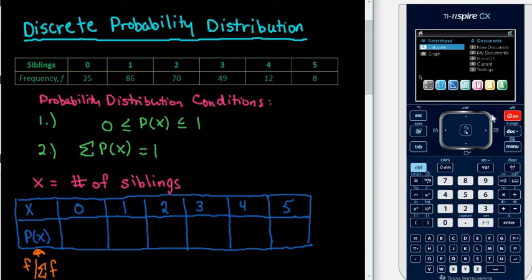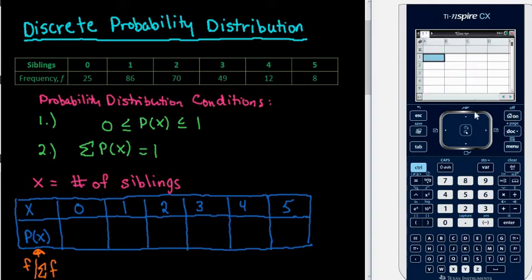So in order to do that, I have to open up a spreadsheet screen. I am going to name the first column Siblings, so I am just going to write in S-I-B for Siblings. And then I am going to call the next column the Frequency column so that we know that this is a frequency. And then we would just put in our data values into each of these columns.